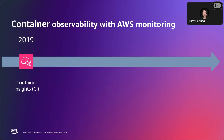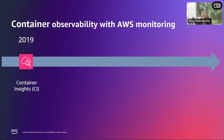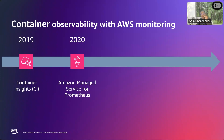Thank you Lucy for such a great introduction. Let's quickly go through some timelines. In 2019, AWS introduced Container Insights — a fully managed native observability service for containers. It's reliable, it's secure, and it has built-in analytical capabilities. In 2020, we introduced Amazon Managed Service for Prometheus — a serverless Prometheus-compatible monitoring service to securely monitor your container environments at scale. It's fully managed, secure, and highly available.